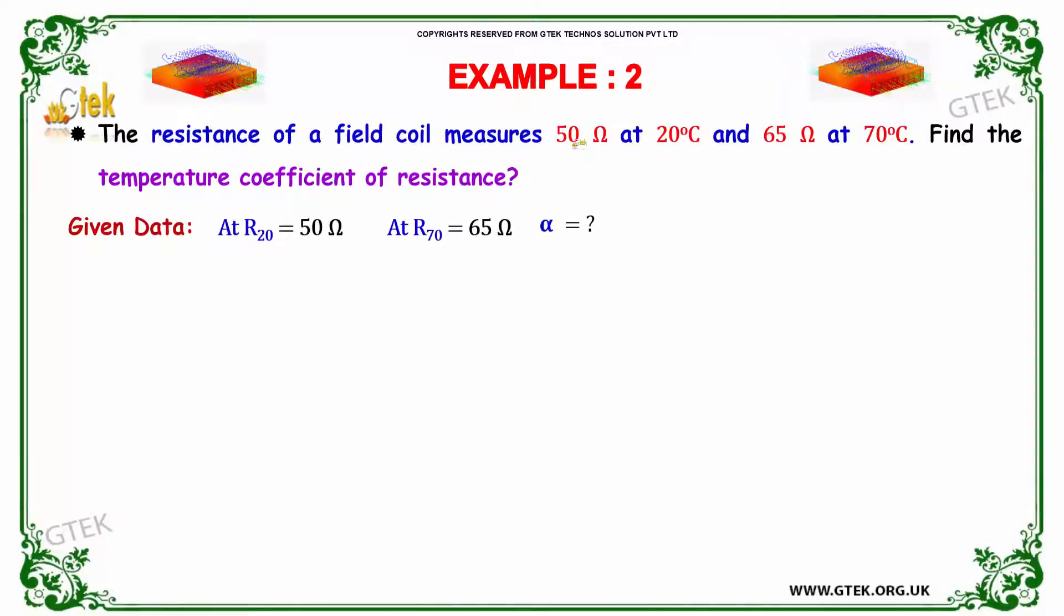We'll move on to the next problem, Example 2. The resistance of a field coil measures 50 ohm at 20 degree Celsius and 65 ohm at 70 degree Celsius. I need to identify the temperature coefficient of the resistance.